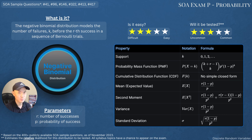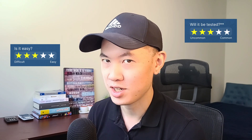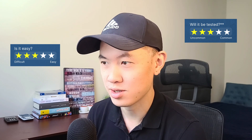The negative binomial is also multiplied by k plus r minus 1 choose k. If we think of the rth success as fixed — because that's when you stop the trials — then there are r minus 1 successes and k failures before the rth success. The number of combinations of r minus 1 successes and k failures is k plus r minus 1 choose k. The expected value and variance I would just memorize for the exam. Is it easy? This one gets a 3 out of 5 — by definition it's a little more complicated than the geometric. Will it be tested? It's not super popular like the binomial, but it's also not entirely obscure, so right down the middle: 3 out of 5.